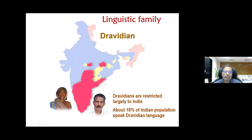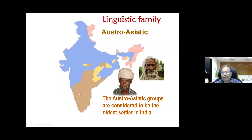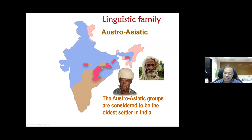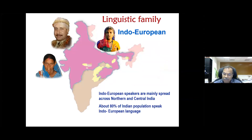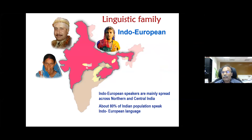One is the Dravidians — people who live in the southern part of India and speak Dravidian languages. Then there are people who speak Asiatic languages. Third are the Tibeto-Burman speakers, people who live in northeast and northern India. The majority in the north speak Indo-European languages. These are the four major linguistic groups, and under each group there are several languages.